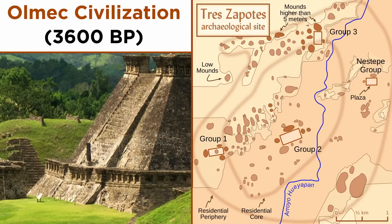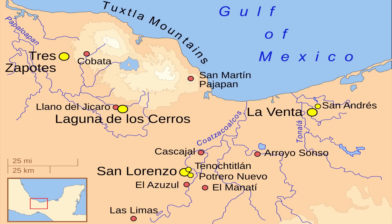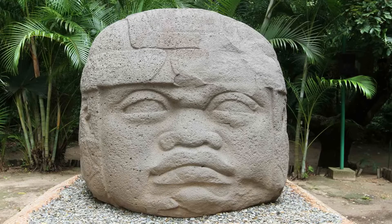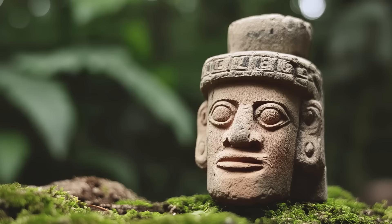The Olmec civilization is usually credited as the first in North America, beginning around 3600 BP. Instead of river valleys, cities were built in fertile lowlands of the Gulf Coast. They are most famous for the large stone heads they created. Several features were present in Olmec society that would become staples of civilizations after them.